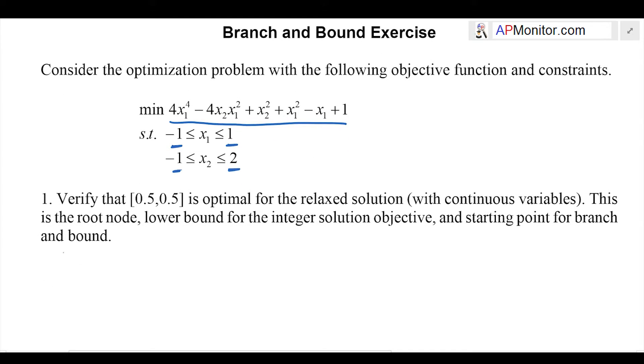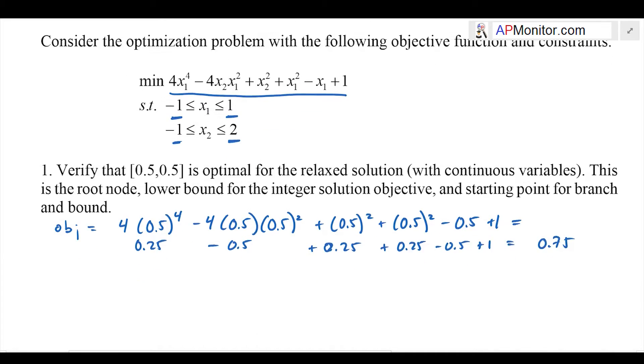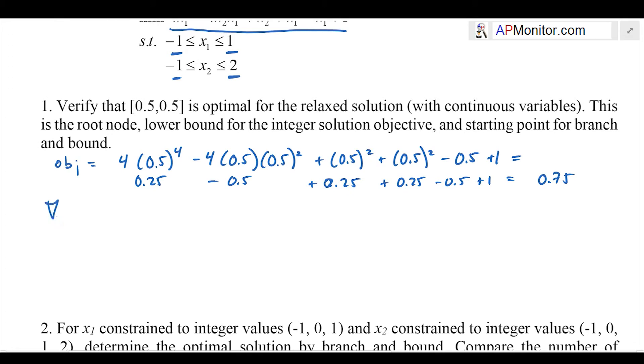We're going to first verify that 0.5 and 0.5 is the optimal solution. I'm going to calculate the objective of my optimal solution. This is not necessary to verify that it's an optimal point, but it's going to give me a lower bound when I start the branch and bound algorithm. The objective is 0.75.